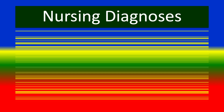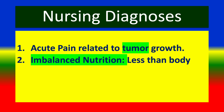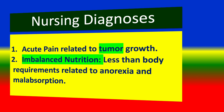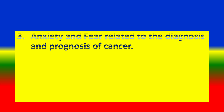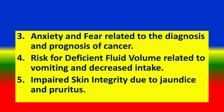Nursing diagnoses for pancreatic cancer include: (1) acute pain related to tumor growth; (2) imbalanced nutrition — less than body requirements — related to anorexia and malabsorption; (3) anxiety and fear related to the diagnosis and prognosis of cancer; (4) risk for deficient fluid volume related to vomiting and decreased intake; and (5) impaired skin integrity due to jaundice and pruritus.